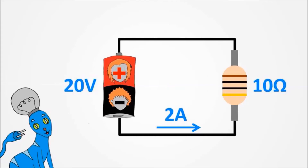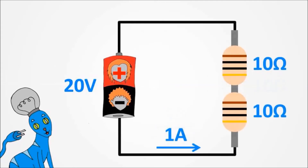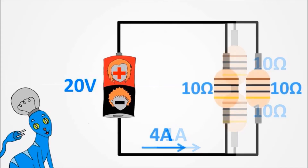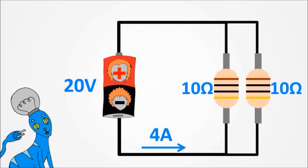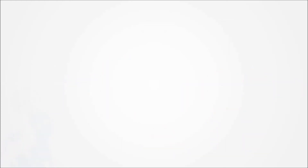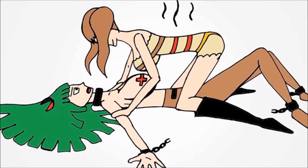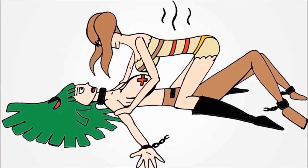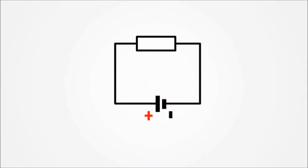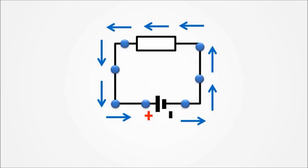We can also raise the circuit's current by raising the battery's voltage. If we associate resistors in series, the current reduces. But if we associate resistors in parallel, the total current raises — but we will have two different currents, one in each resistor. Resistina used her body's resistance to discharge Betty's battery body.